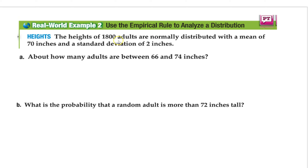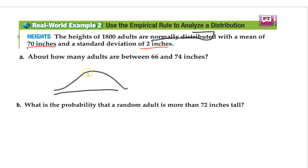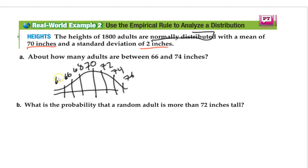The heights of 1,800 adults are normally distributed with a mean of 70 inches and a standard deviation of 2. Let's draw our normal distribution. My mean is 70, standard deviation is 2, so going up: 72, 74, 76, and going down: 68, 66, 64. Now, how many adults are between 66 and 74 inches? 66 is two standard deviations below the mean and 74 is two above. We'll apply the empirical rule.